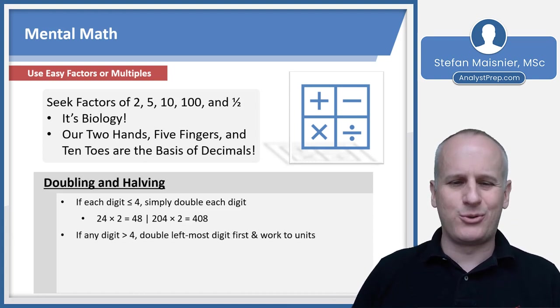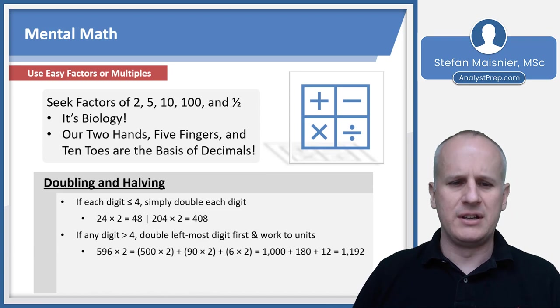But if any digit is greater than four, you have to double the leftmost digit first and then work towards the units digit. So for instance, 596 times two, that's going to be 500 times two plus 90 times two plus six times two. So 500 times two becomes 1000, 90 times two becomes 180, and six times two becomes 12. And we add all of that together to find that 1000 plus 180 is 1180, and 1180 plus 12 is 1192.